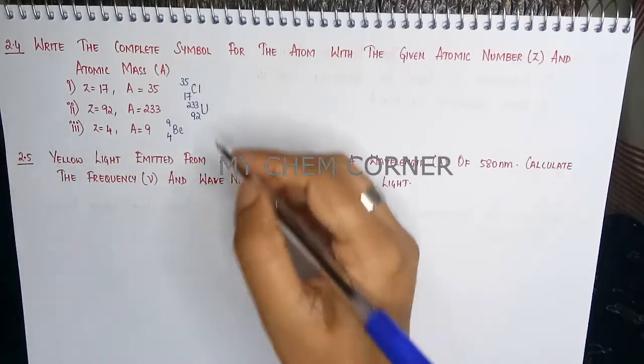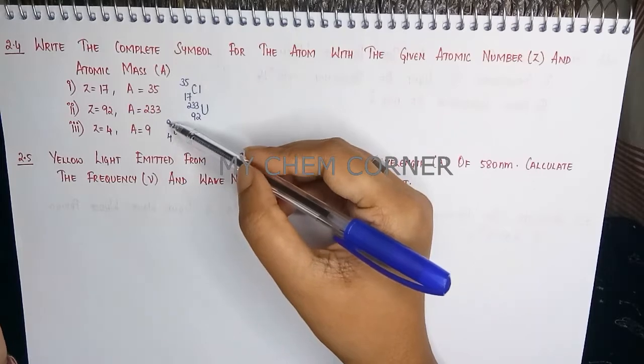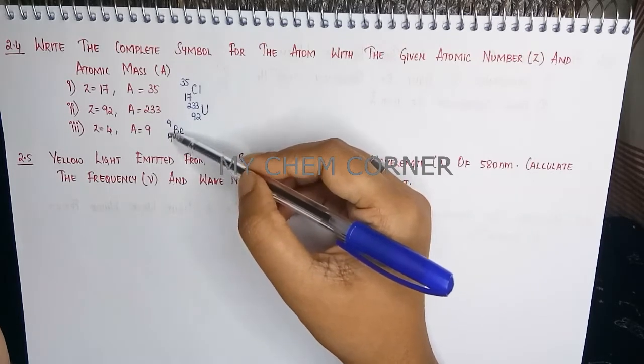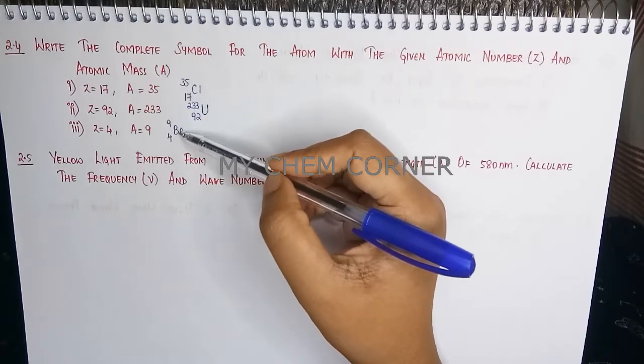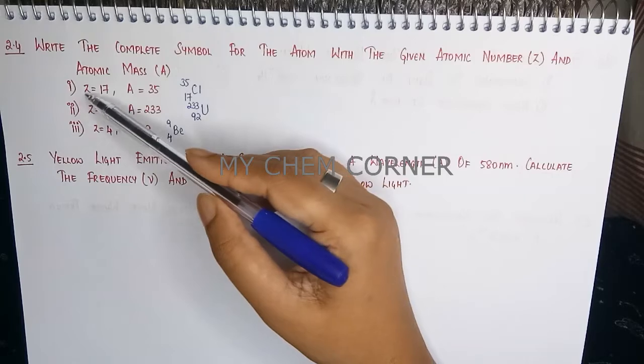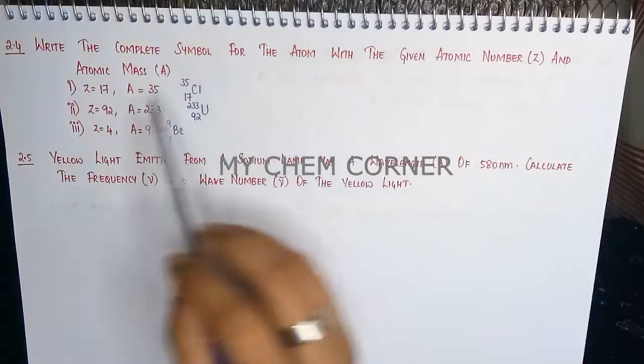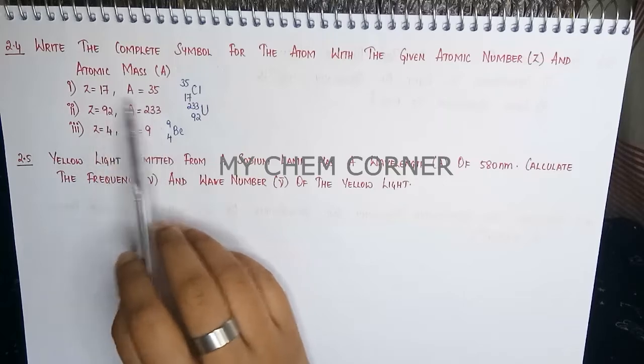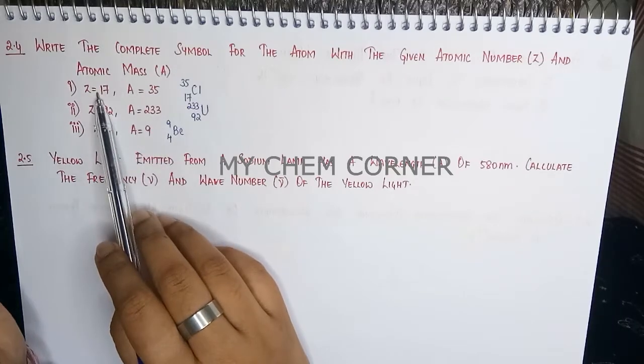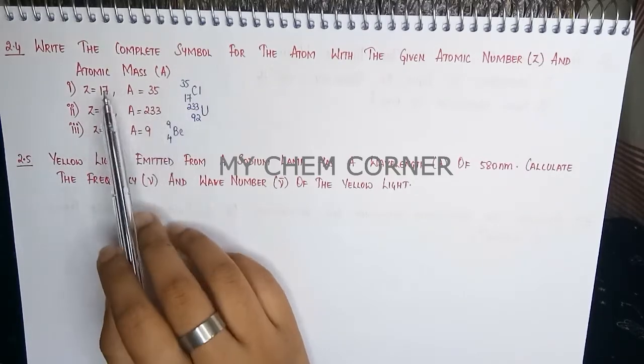So if you know how to write the atomic number and atomic mass, it is easy for you to put them, provided you know which element is for which atomic number. So Z means atomic number, A means atomic mass. So here if you can identify which atomic number is for which element, it is easier for you to write the symbol.